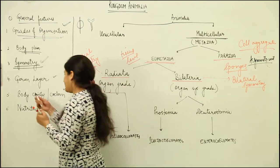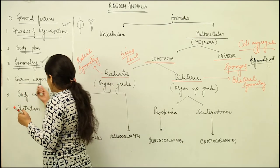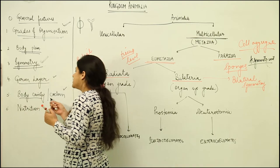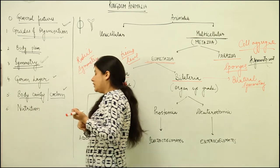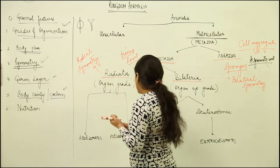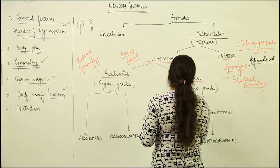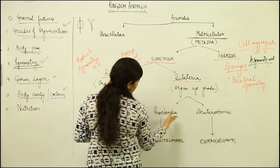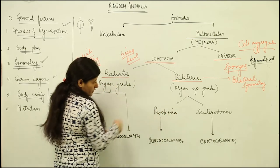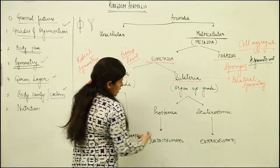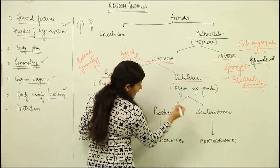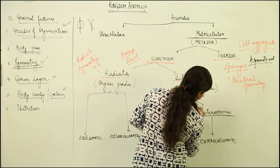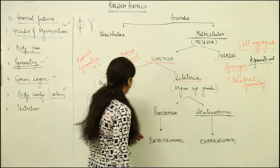What is a germ layer? What is a body cavity? What is coelom? As you can see, we have two more terms: protostomia and deuterostomia.